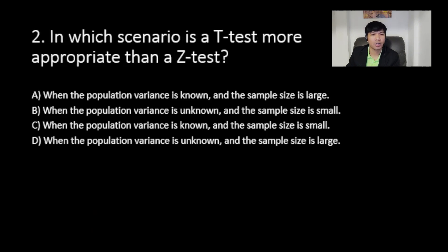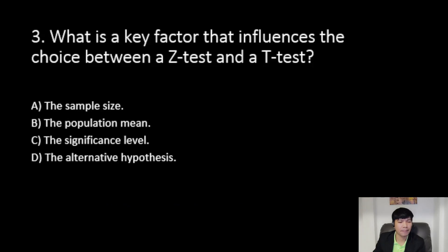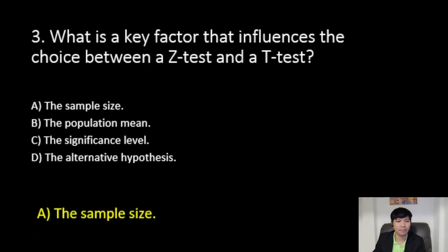Number two: in which scenario is a T-test more appropriate than a Z-test? The answer is letter B: when the population variance is unknown and the sample size is small. Number three: what is the key factor that influences the choice between the Z-test and a T-test? The answer is letter A: the sample size.